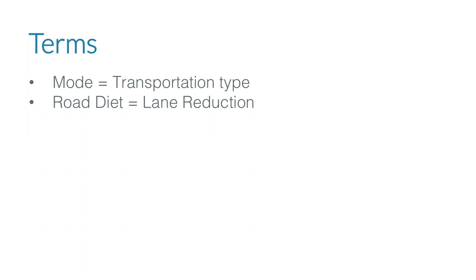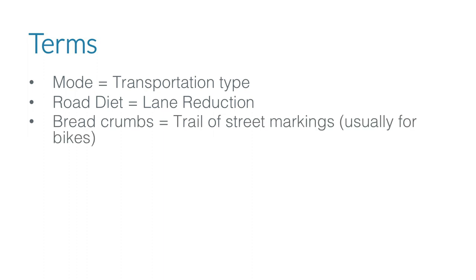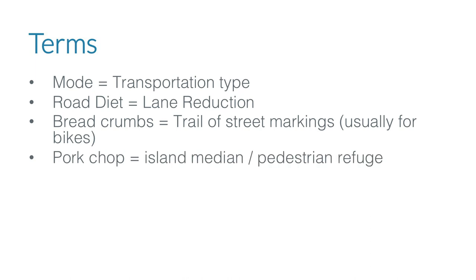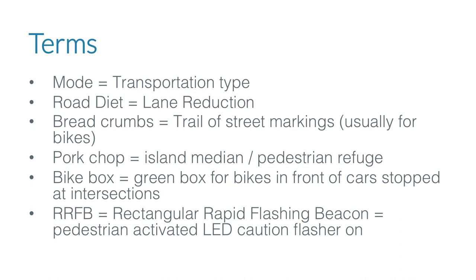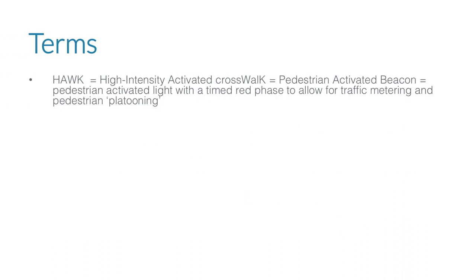Now for the food terms. A road diet is a lane reduction. Breadcrumbs are a trail of street markings, usually for bikes. A pork chop is an island median and pedestrian refuge. A bike box is the green box you see in front of cars — sometimes called a Portland left. An RRFB, or rapid rectangular flashing beacon, flashes and activates as a caution for drivers. A high-intensity activated crosswalk, or HAWK beacon, is another type, activated with a timed phase to allow for traffic platooning — pedestrians sticking together like a school of fish.